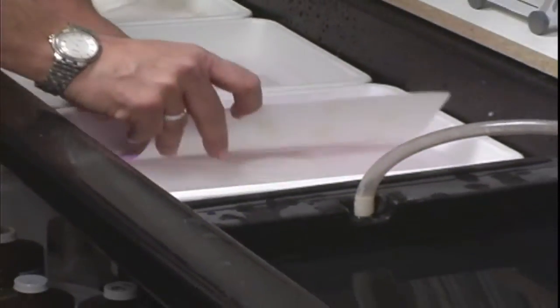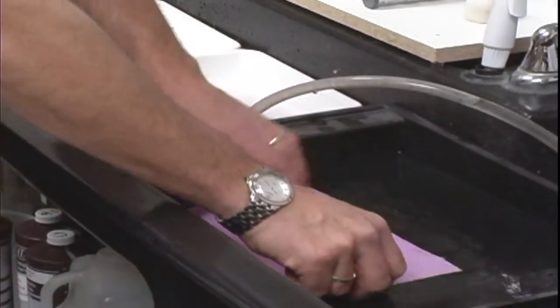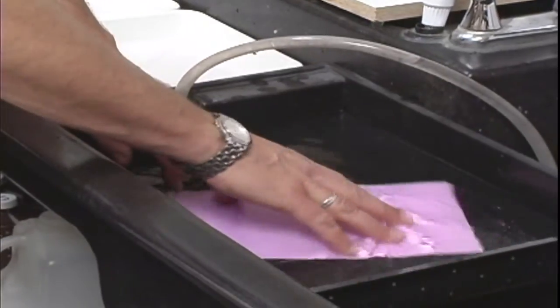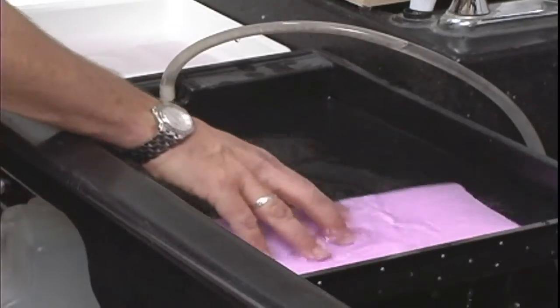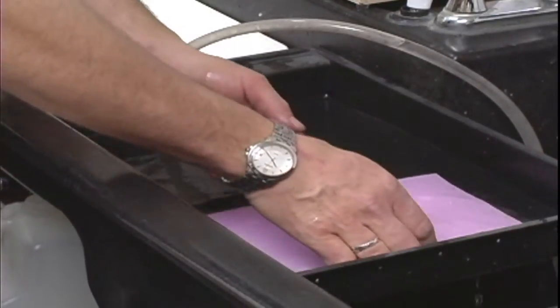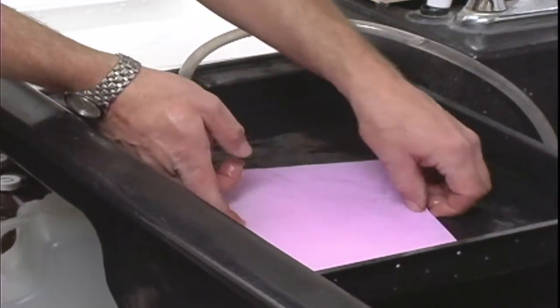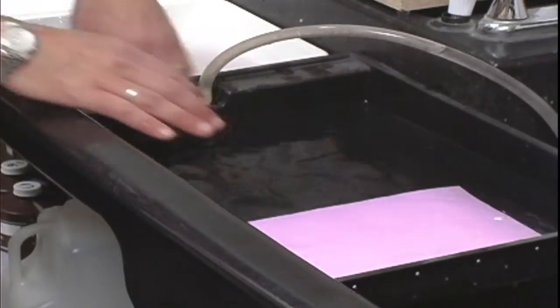Once the fixer is done, we're going to put it in our wash. Typically, your wash will last a couple of minutes, and you want to wash your paper and get all the chemistry out of it. It's important to do this step because this is going to make it very permanent.